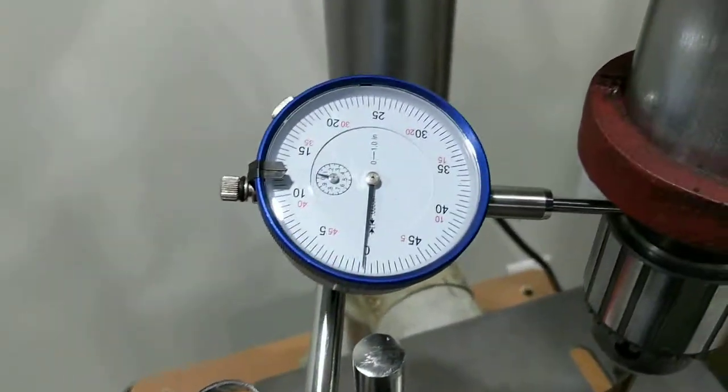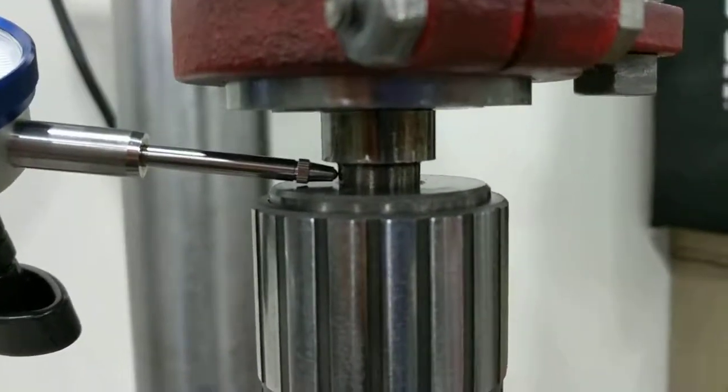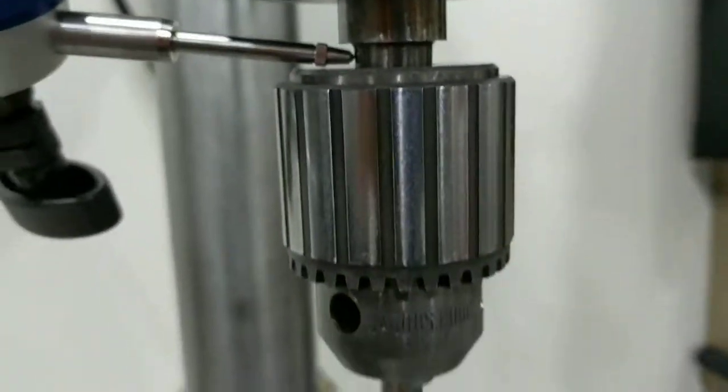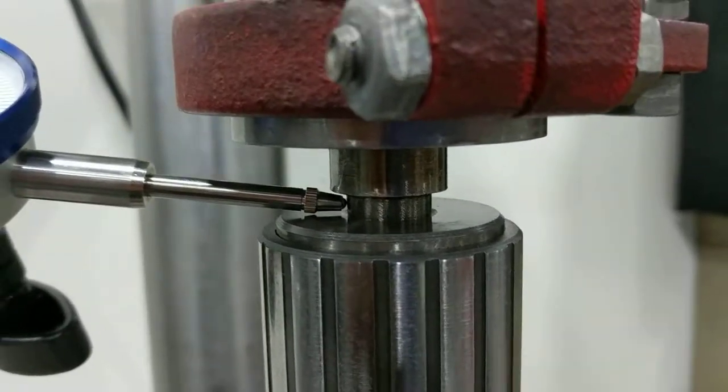And you can see I've got the dial gauge here set up just above the chuck. This is on the taper, the Morse taper for the chuck. So probably the best place to measure this.